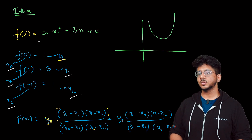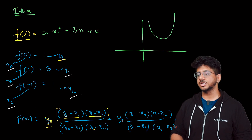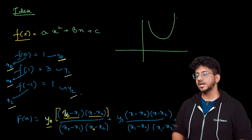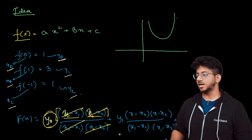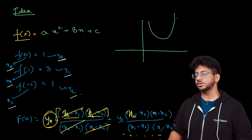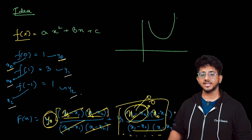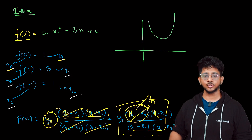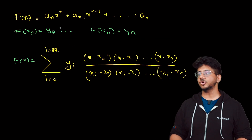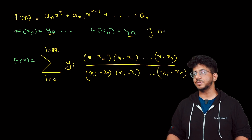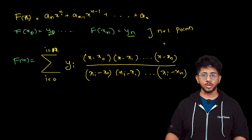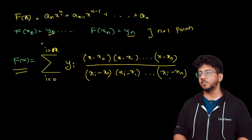Basically what it says is: you can write f(x) equal to this particular thing. Why? Because if you put x₀ into (x - x₁)(x - x₂) divided by (x₀ - x₁)(x₀ - x₂), the terms cancel and you get y₀. The other Lagrange terms, when you put x₀, one of the terms becomes 0 so the whole term becomes 0. So the main idea is: any polynomial of degree n, given y₀, y₁, ... yₙ — that's n+1 points — you can get the equation of that polynomial.